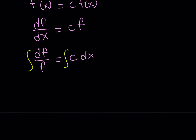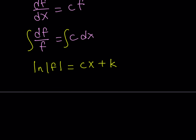Integrating both sides — we don't know if f is positive or negative on the interval, so let's write it with absolute value. The integral of 1 over f is the natural log of the absolute value of f. The right-hand side integrates to cx, and we write the constant on one side since the difference of constants is another constant. So we get ln of the absolute value of f equals cx plus k.